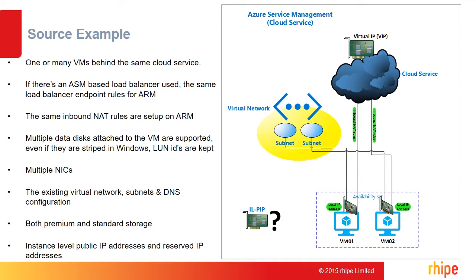The tool can automatically migrate Azure virtual machines from one subscription on ASM to another subscription on ARM. The tool takes into consideration every possible combination for the source ASM-based virtual machine — for example, if the VM sits behind a cloud service with other VMs also behind the same cloud service, whether there's an ASM-based load balancer used, bringing across the same load balancer endpoint rules, and any endpoint NAT rules — the same inbound NAT rules are set up on ARM.